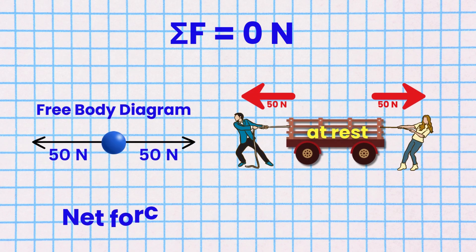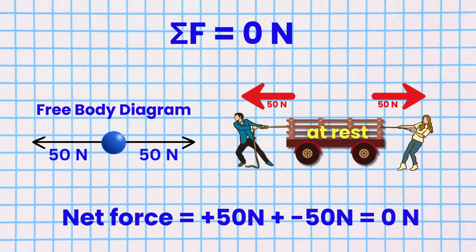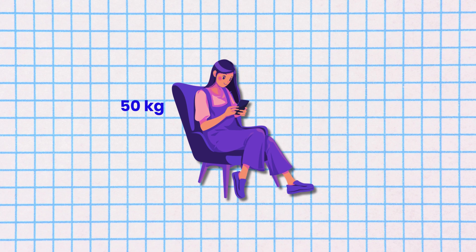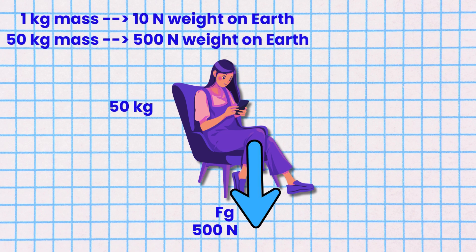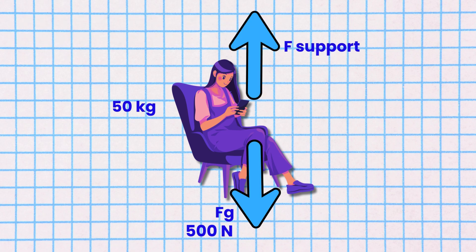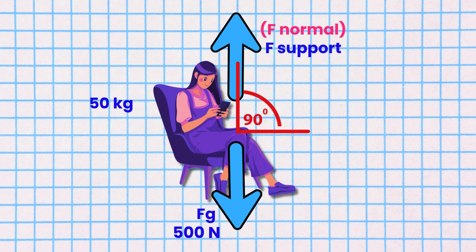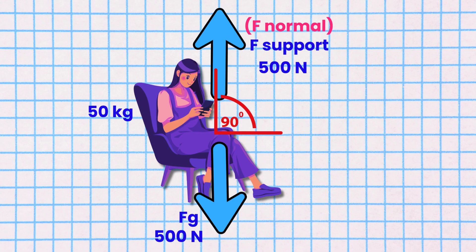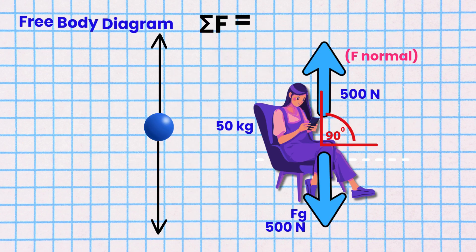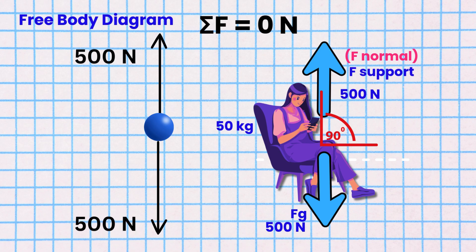Here is the free body diagram for this example. Aion of mass 50 kilograms sits on a chair. The force of gravity pulls Aion downwards. The support force from the chair, which is also called normal force — because this force acts at a 90 degree angle to the surface — pushes her upwards. Since she is at rest, these two forces are equal and opposite. ΣF = 0 newtons. Here is the free body diagram for this example.